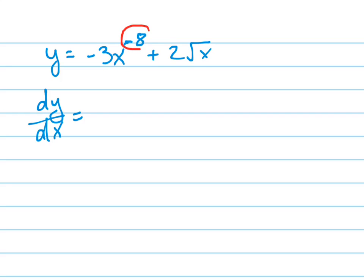You take the numerator, you drop it down, multiply it by the coefficient in front, and then reduce it by 1. Reducing that by 1 is going to turn that into x to the negative 9.